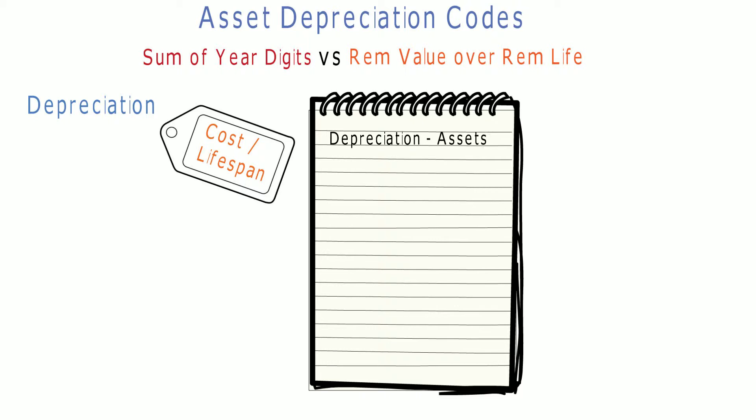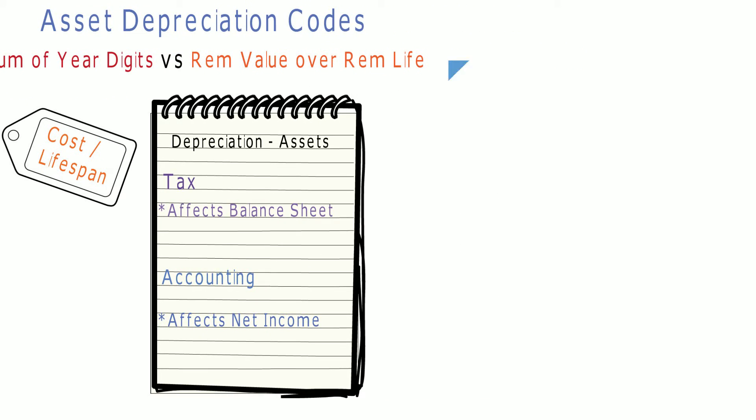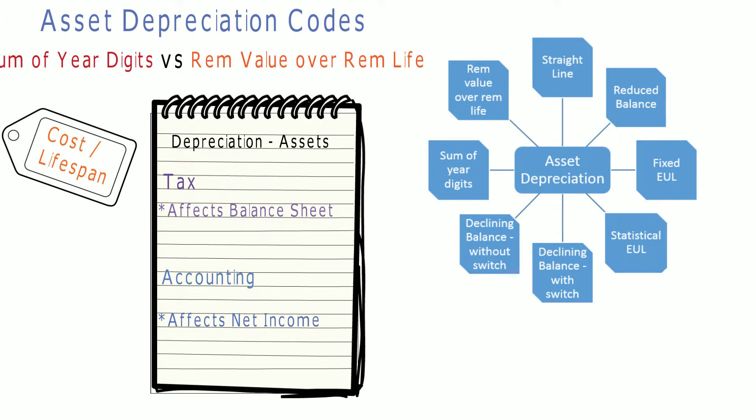Businesses depreciate long-term assets for both tax and accounting purposes. The former affects the balance sheet of a business or entity, and the latter affects the net income that they report.